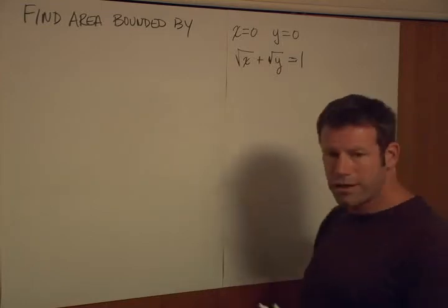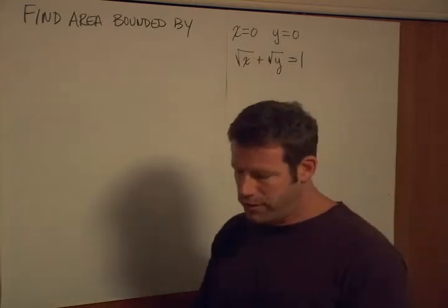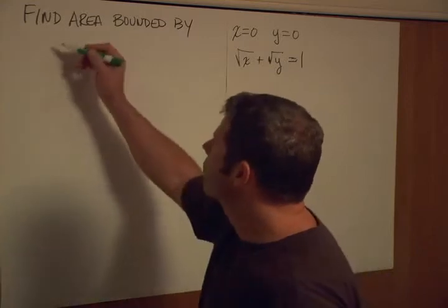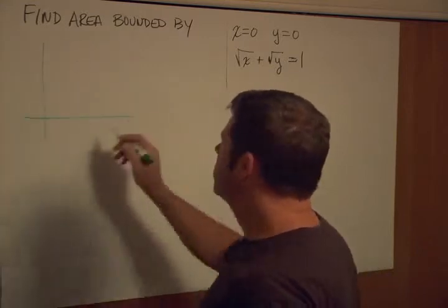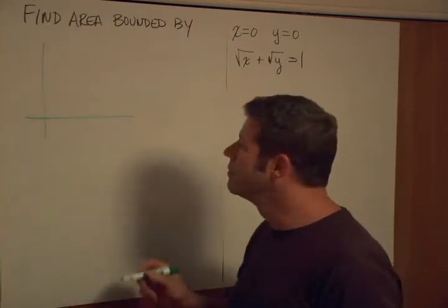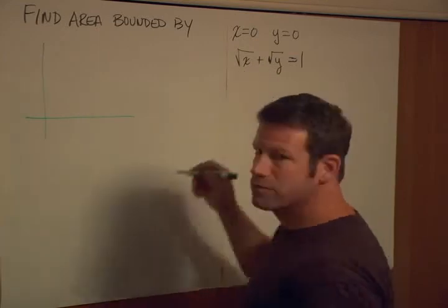So let's try to graph it and see what we come up with as far as what we're looking at. So here's x and y equals zero, and we have square root of x plus square root of y equals one.